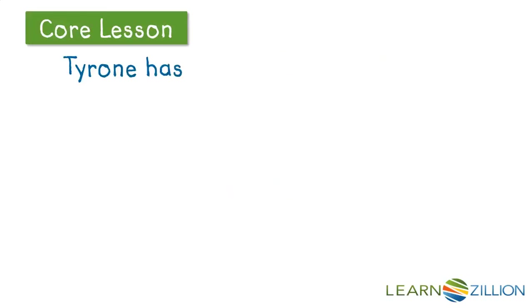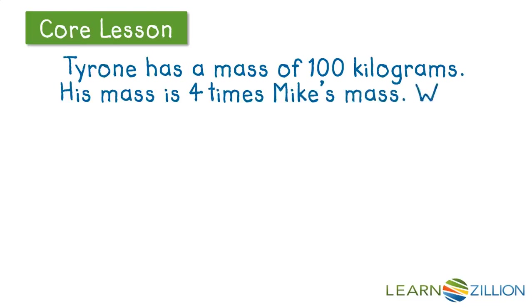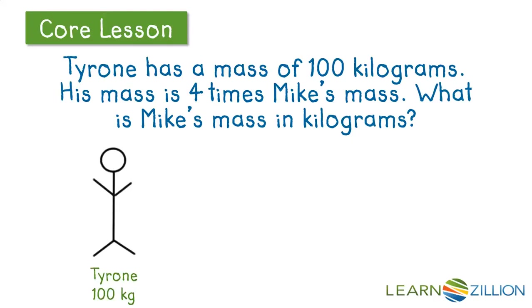So let's return to Tyrone and Mike. Tyrone has a mass of 100 kilograms and his mass is four times Mike's mass, and we want to find out Mike's mass. So here's Tyrone and his mass is 100 kilograms, and here's Mike. We don't know what his mass is, but we do know that four Mikes is equal to one Tyrone. That's what four times means — it's four times Mike's mass.